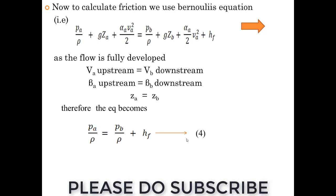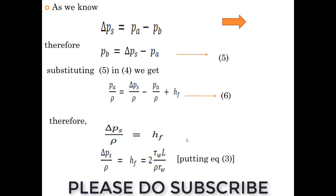We can cancel on both sides. Upstream velocity and downstream velocity is same because it is a fully developed flow. Then we are left with PA by rho equals PB by rho plus HF. Now we know that delta P is nothing but PA minus PB. PB equals delta P minus PA on substituting equation 5 in 4 and applying the equation.